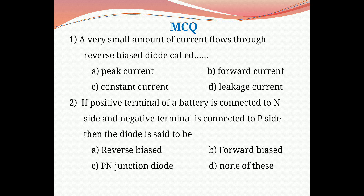Question 2: If the positive terminal of the battery is connected to the N side and the negative terminal is connected to the P side, then the diode is said to be — Option A: reverse bias, Option B: forward bias, Option C: PN junction diode, Option D: none of these. As stated in the definition of reverse bias PN junction diode, if the positive terminal is connected to N side and the negative terminal to P side, it is reverse biased. Therefore the correct answer is A.